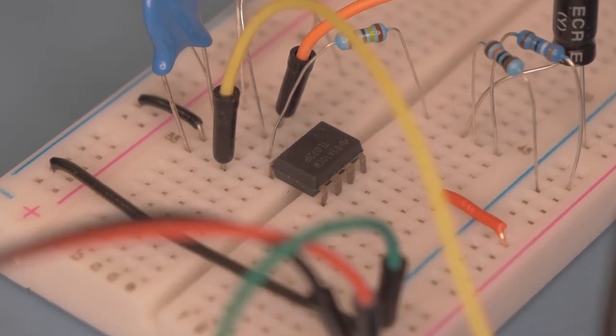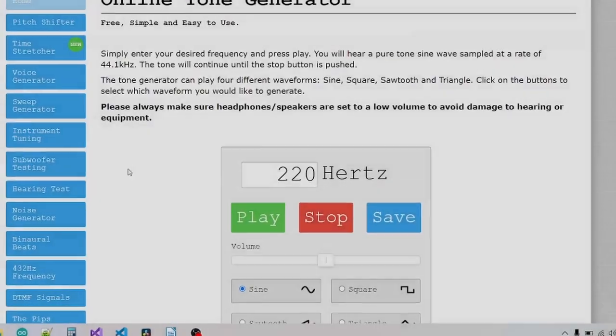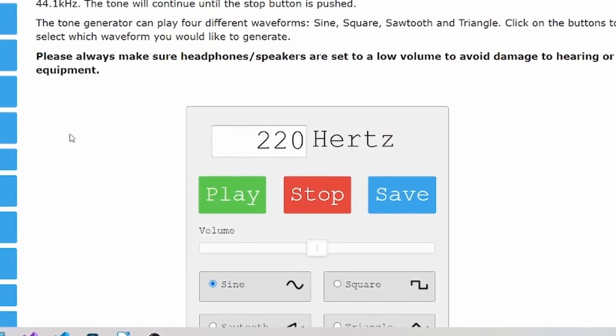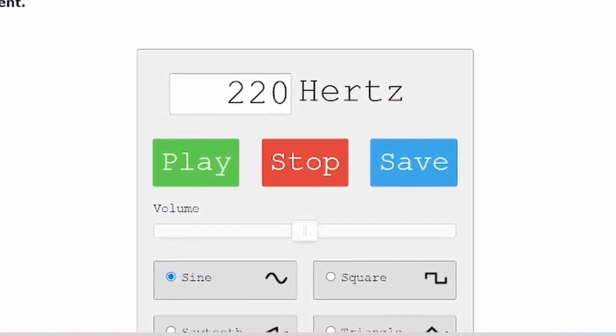Everything I've explained thus far has been true and works, but I missed one important detail that changes everything. Remember this website I used to play the 220 hertz tone? See that volume slider? It didn't occur to me at first that I needed to turn that volume slider all the way up to truly see the maximum voltage range on the RCA output.